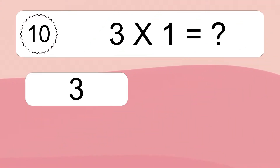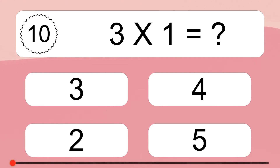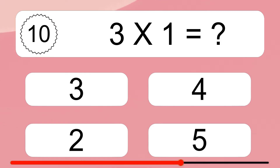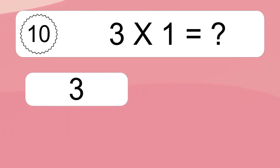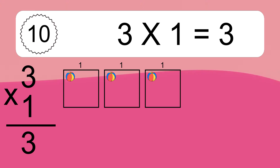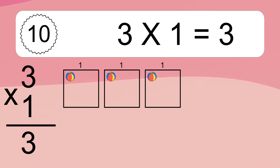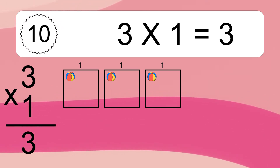3 times 1 equals what? 3 times 1 equals 3. We have 3 boxes, and each box has 1 colorful ball inside. If you count all the balls in all the boxes together, you will have 3 times 1 balls. This equals 3 balls.